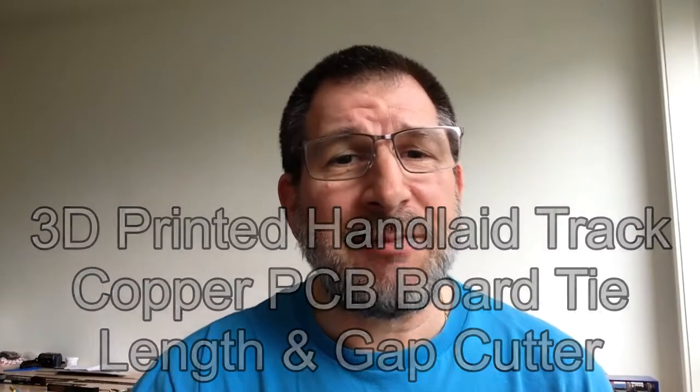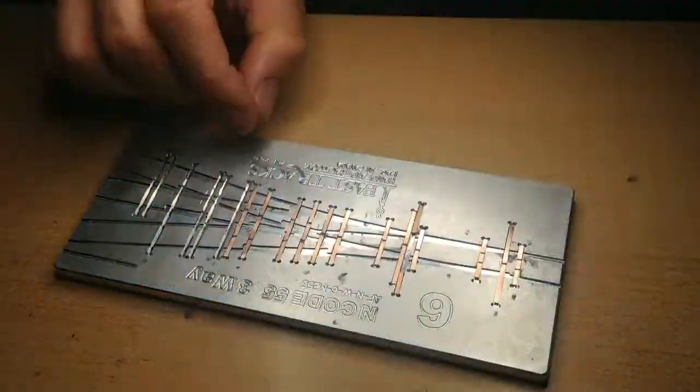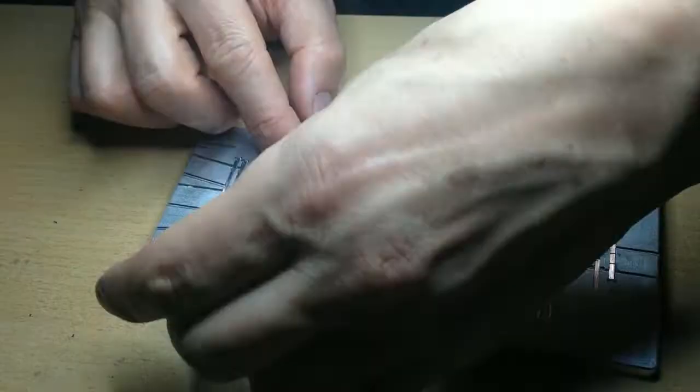Let's say you're making a hand-laid piece of track and you need to cut the tie gaps on your copper ties. You can file it by hand using a little tiny file, and if you've seen the other videos I've made, I've done that. It takes a really long time and it's not very accurate, and you end up with a pretty ugly looking product in my opinion.